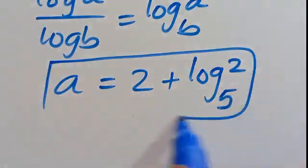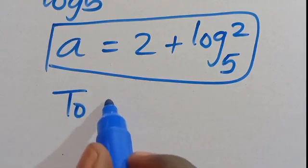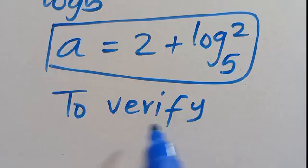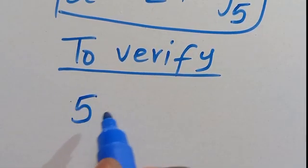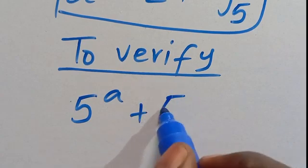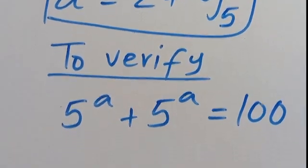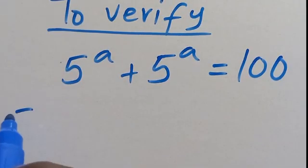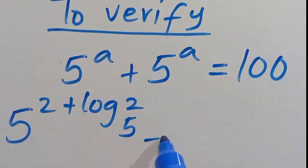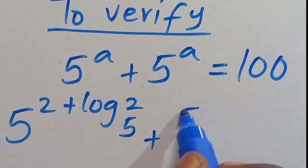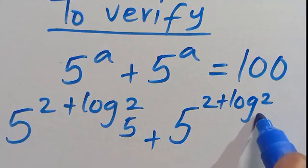This is the value of A. Let us now check to verify. Recall that we have 5 to the power of A plus 5 to the power of A equals 100. We substitute our value: 5 to the power of 2 plus log 2 in base 5, plus 5 to the power of 2 plus log 2 in base 5.